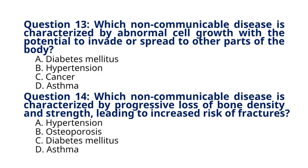Question 14: Which non-communicable disease is characterized by progressive loss of bone density and strength, leading to increased risk of fractures? A. Hypertension, B. Osteoporosis, C. Diabetes mellitus, D. Asthma. The correct answer is option B, Osteoporosis. Explanation: Osteoporosis is a skeletal disorder characterized by reduced bone density and deterioration of bone tissue, increasing the risk of fractures, particularly in the spine, hips, and wrists.